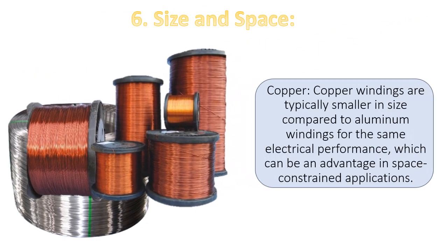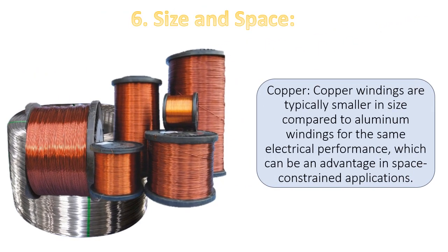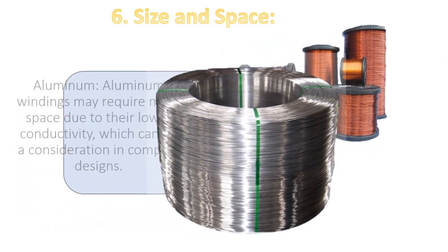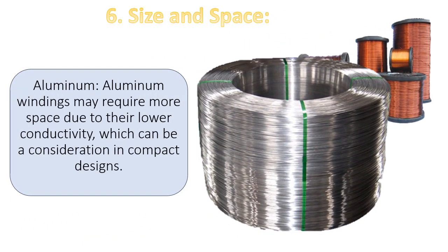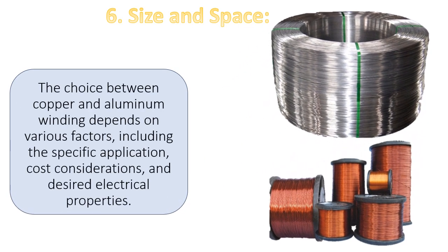6. Size and space. Copper windings are typically smaller in size compared to aluminum windings for the same electrical performance, which can be an advantage in space-constrained applications. Aluminum windings may require more space due to their lower conductivity, which can be a consideration in compact designs.